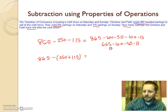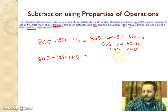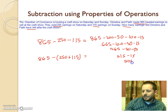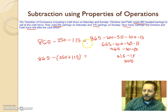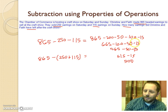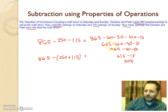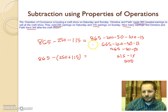Taking away 100 leaves 565. Then taking away 50 from 565 leaves 515. Now removing the 15 from 515 gives us 500. She will have 500 beads remaining to sell after the craft show. You're decomposing the numbers and using properties to rearrange the order of subtraction to make it easier - as long as you subtract all the parts from the original total.